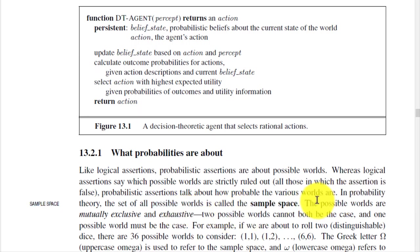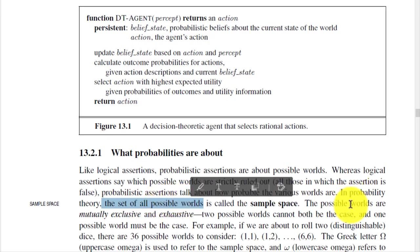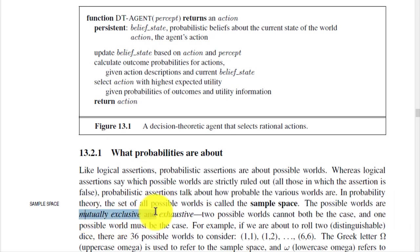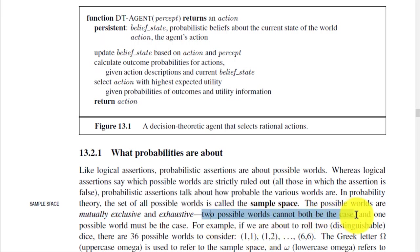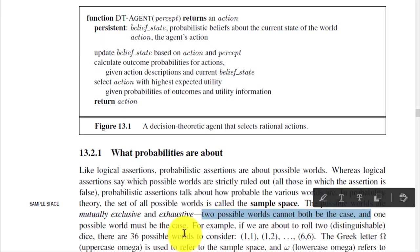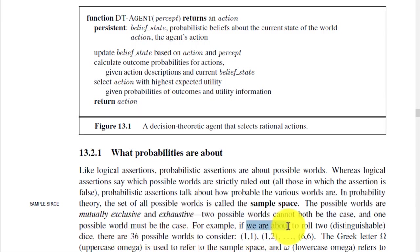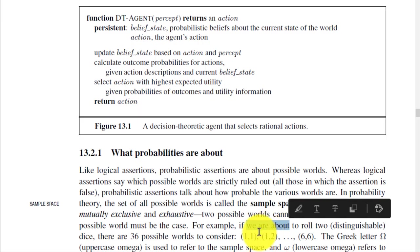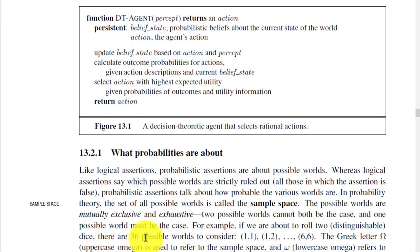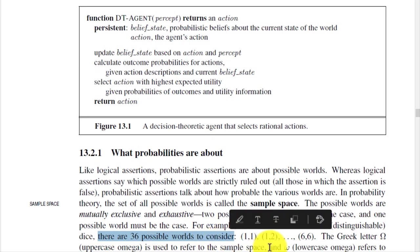In probability theory, the set of all possible worlds is called the sample space. The possible worlds are mutually exclusive and exhaustive — two possible worlds cannot both be the case, and one possible world must be the case. For example, if we roll two distinguishable dice, there are 36 possible worlds to consider: (1,1), (1,2), up to (6,6).